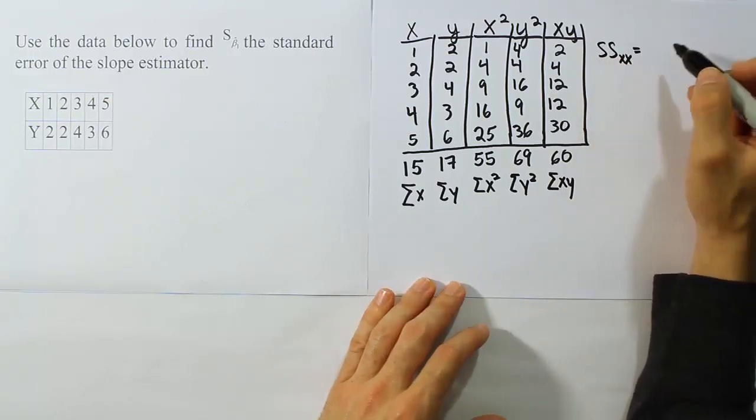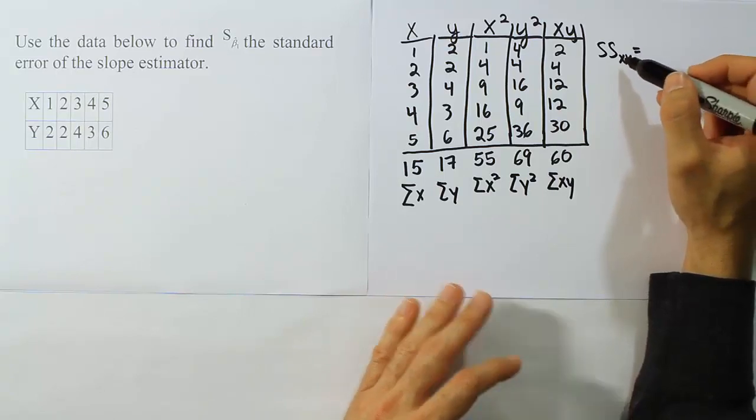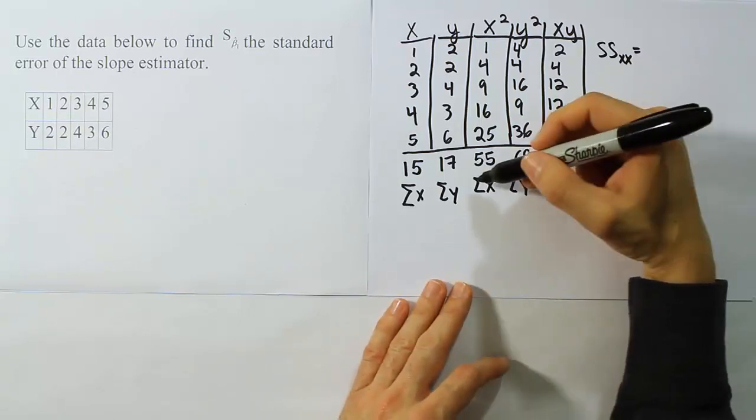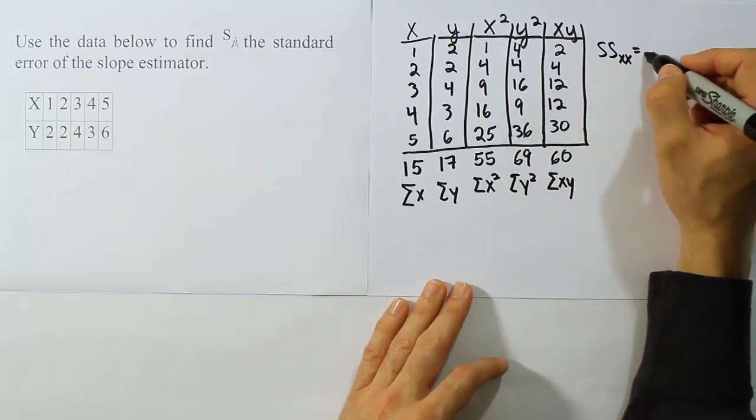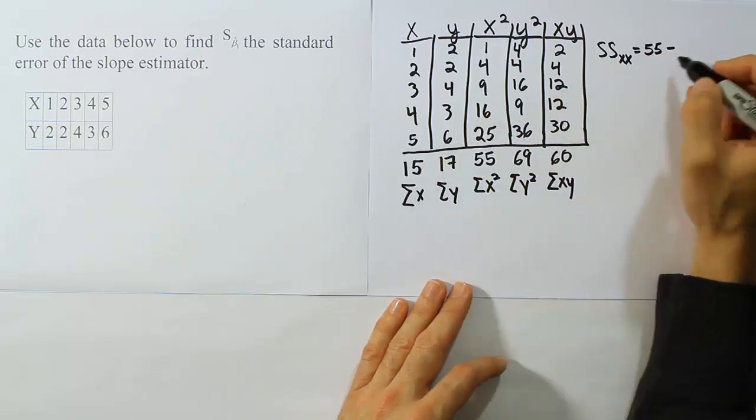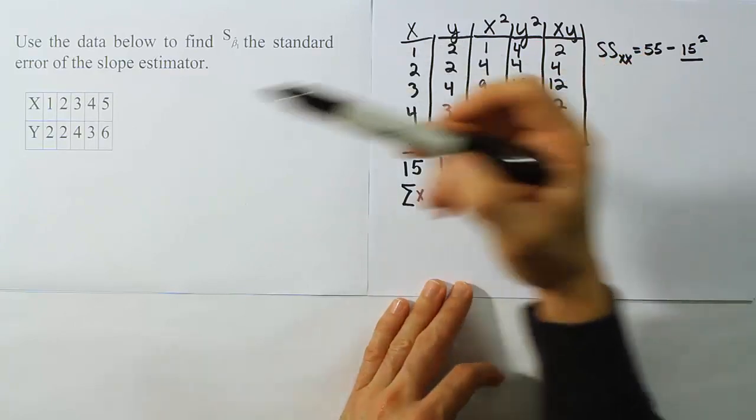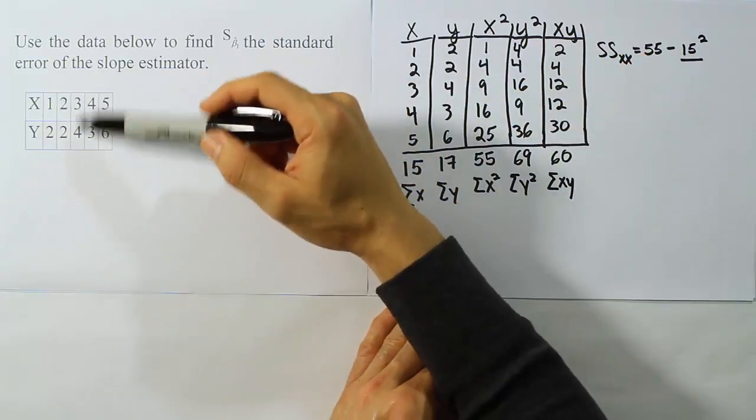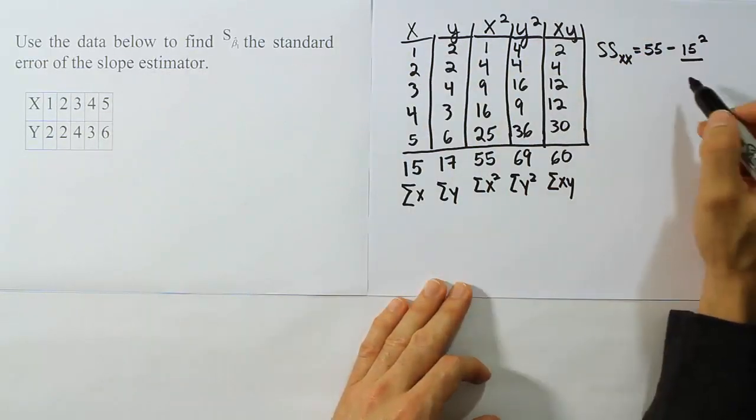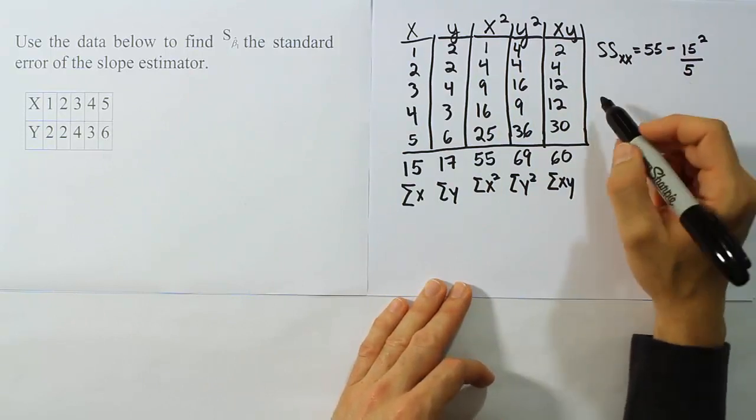Now once we have all of those values, we need to plug them into our formulas for the different sums of squares. Let's get x, x first. So what we do for the sum of square for x, x is we actually take this guy here, the sum of x squared, and we do 55 minus the sum of x quantity squared divided by n. Now the n is the number of ordered pairs we had, one, two, three, four, five different ordered pairs. So that's the first formula.